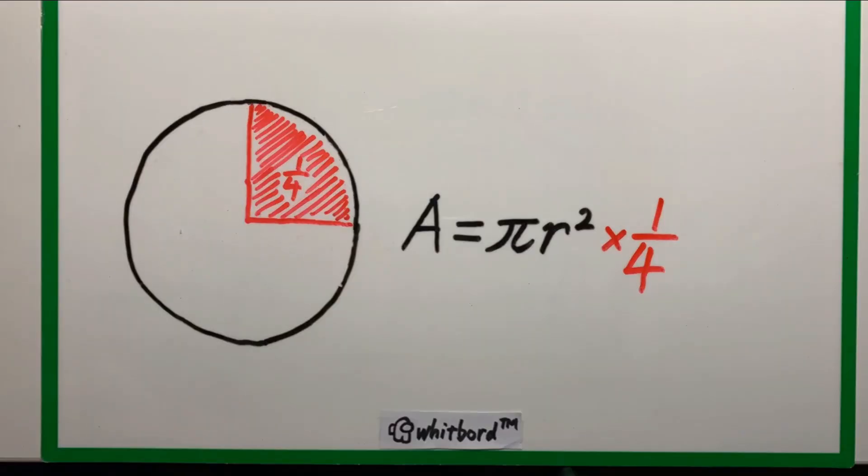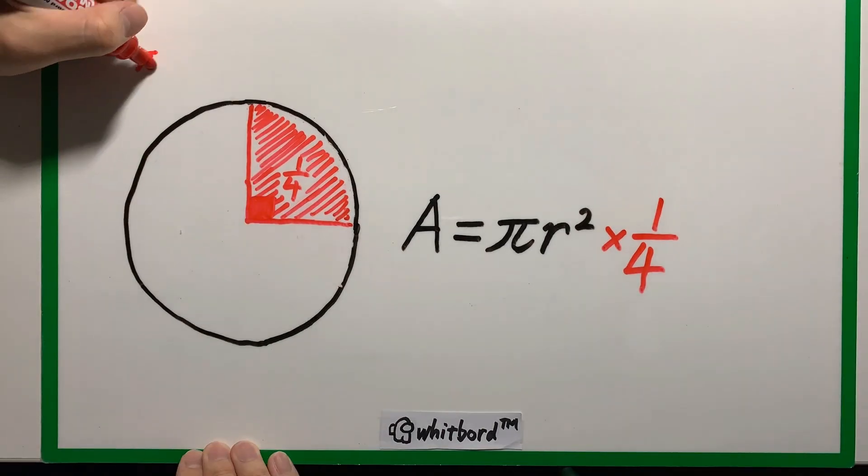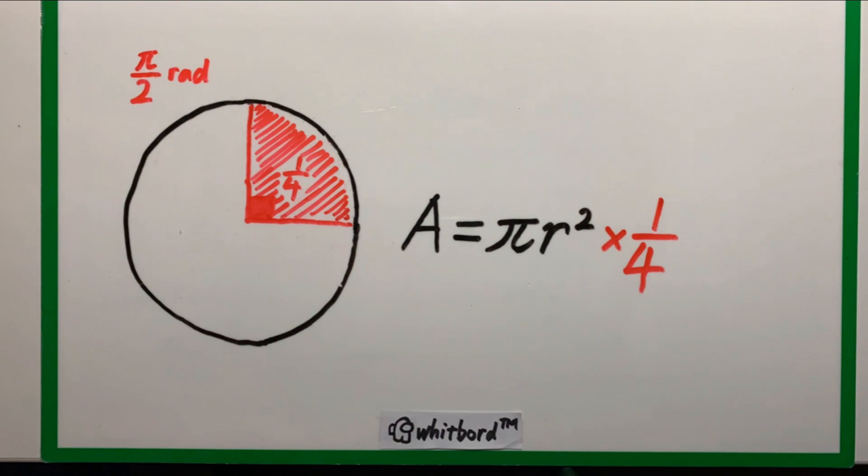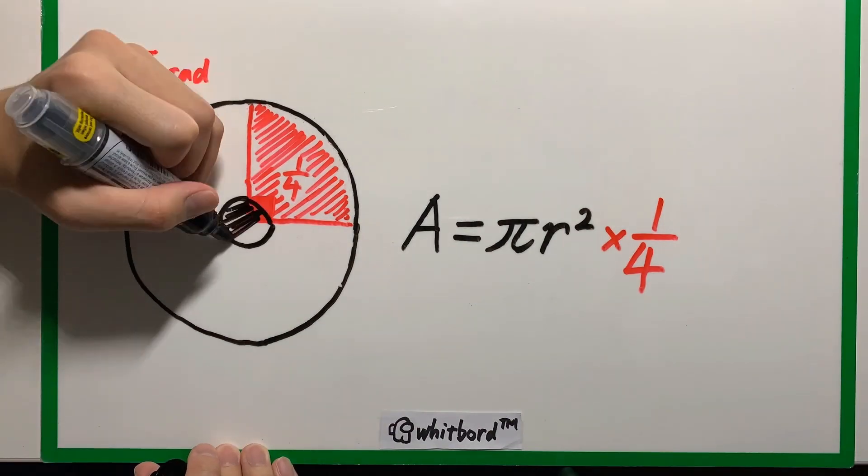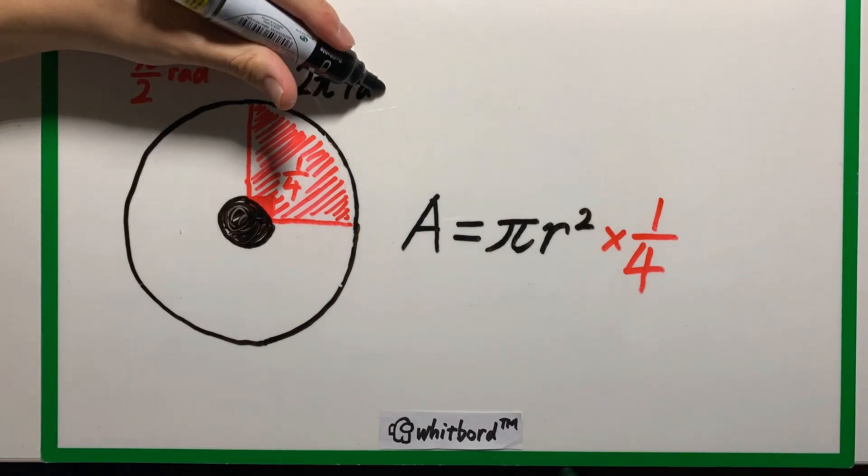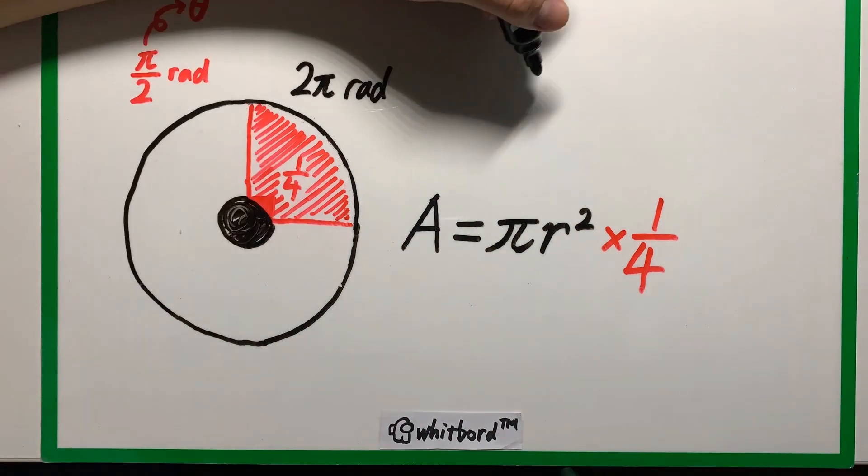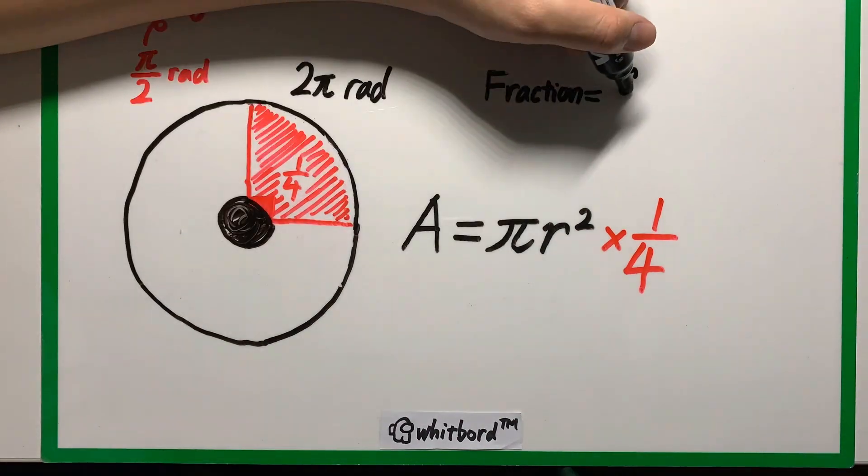Now this fraction is actually equal to the fraction of the angle subtended by the sector and the entire circle, which is basically 2π radian. So this fraction is theta over 2π.